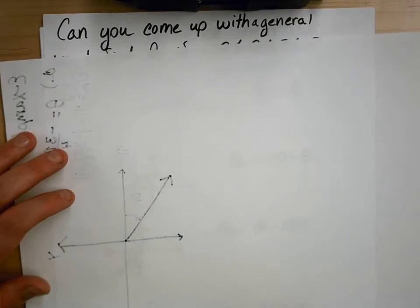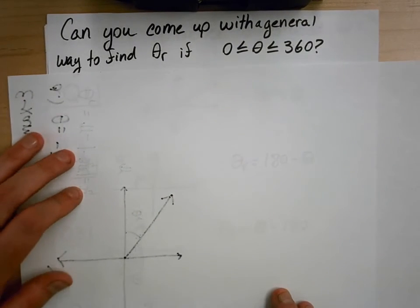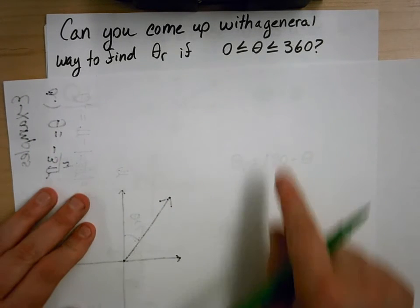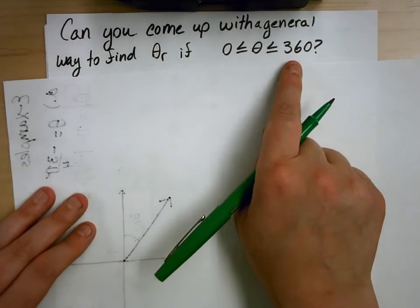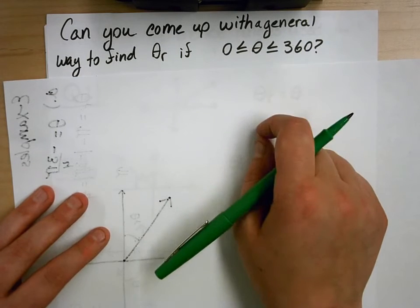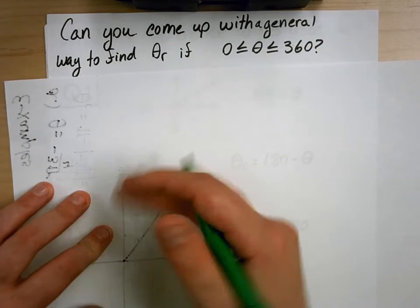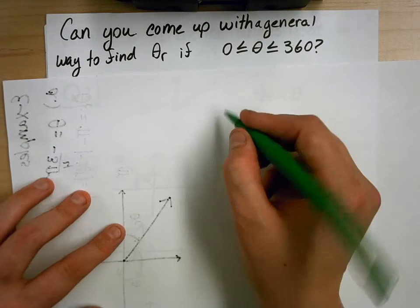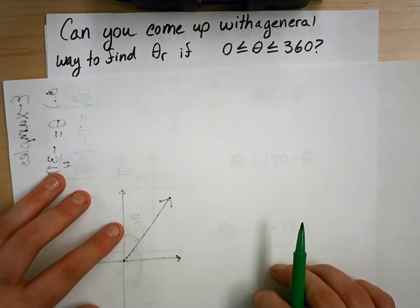Go ahead and pause the video and see if you can come up with a general way to find theta r when the original theta is between 0 and 360 degrees. A hint: try cutting up your rules by what quadrant your angle terminates in.